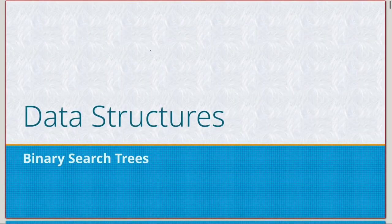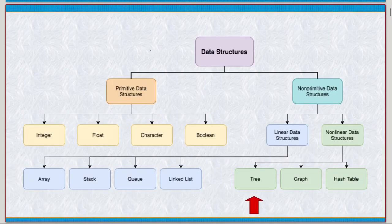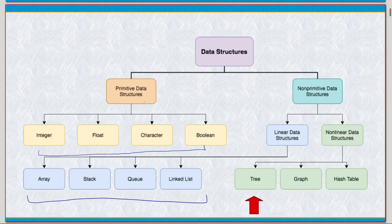Let's swap over to the actual slides. We've gone over most of the primitive data structures — very basic. Then we moved to non-primitive. We've dealt with linear: arrays, stacks, queues, and linked lists. Nothing too special there. But now we finally address at least one part of the nonlinear data structures, and that's going to be trees.